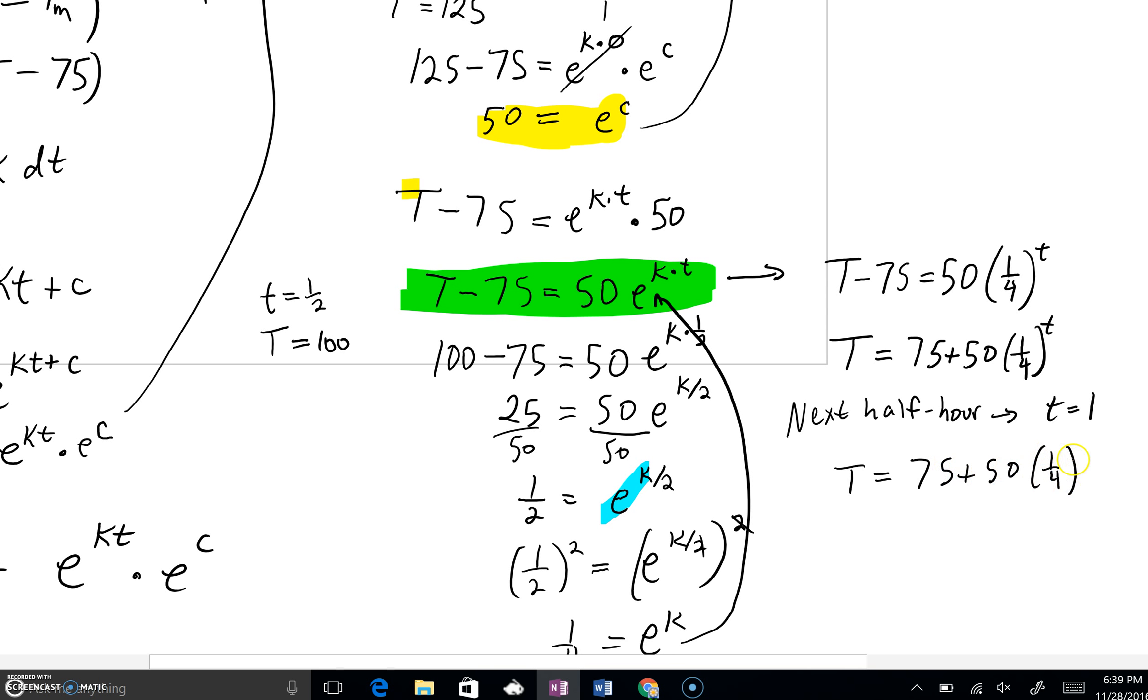Plug in t equals 1, we'll have 75 plus 50, one-fourth to the 1. One-fourth to the 1, of course, is just one-fourth. 50 divided by 4, well, that's the same thing as saying 25 divided by 2 if you reduce that. And 25 divided by 2 is just 12 and a half. 75 plus 12.5 is 87.5. This is degrees Fahrenheit. So this would be your temperature one hour after we started measuring time.